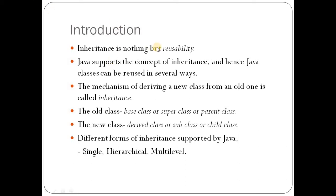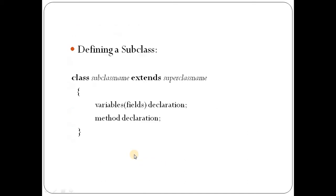Inheritance in Java is a concept of reusability. Two different types of classes are involved. The class which is already defined is called the base class, super class, or parent class. The new class defined with the help of the existing class is called the derived class or subclass. Based on how many super classes and sub classes are involved, we have single, multilevel, and hierarchical inheritance. The subclass is defined using the keyword extends.